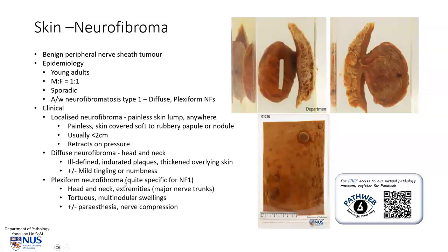The plexiform neurofibroma is really quite specific for neurofibromatosis type 1, and it tends to favour the head and neck as well as the major nerve trunks occurring in the extremities. What we will see are tortuous, very nodular swellings, and again there may be some paresthesia. Diffuse and plexiform neurofibromas are associated with neurofibromatosis type 1.